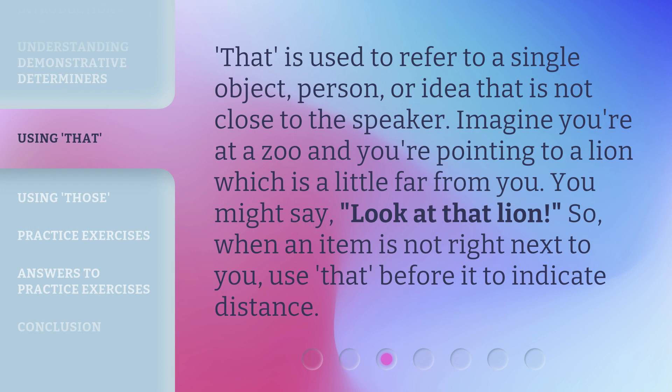'That' is used to refer to a single object, person, or idea that is not close to the speaker. Imagine you're at a zoo and you're pointing to a lion which is a little far from you. You might say, 'Look at that lion.' So when an item is not right next to you, use 'that' before it to indicate distance.